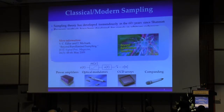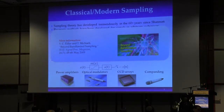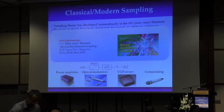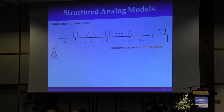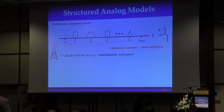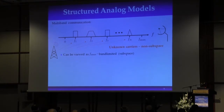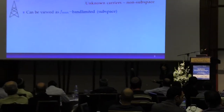So the moral is: if our signal lies in a subspace, we know how to sample it and recover it. That sounds pretty general — in signal processing we like to work in subspaces. But the problem is that subspaces don't capture enough of the signal's information; they force us to work at very high sampling rates. Let me give a few examples to convince you.